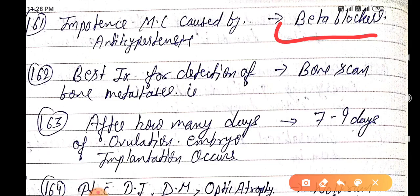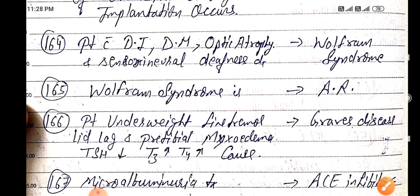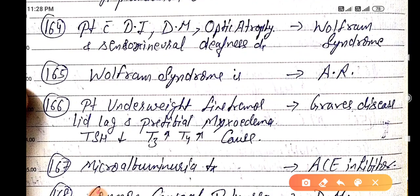Best investigation for detection of bone metastasis is bone scan. After how many days of ovulation does embryo implantation occur? Embryo implantation occurs seven to nine days.